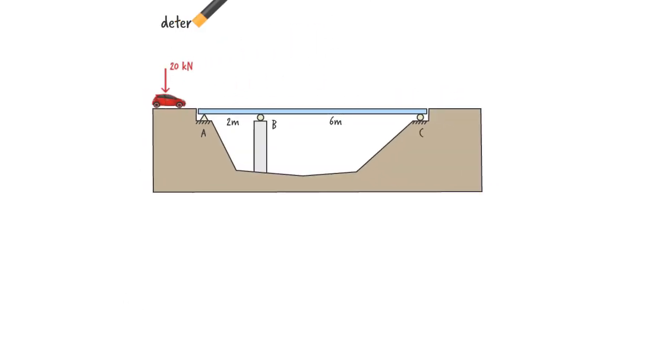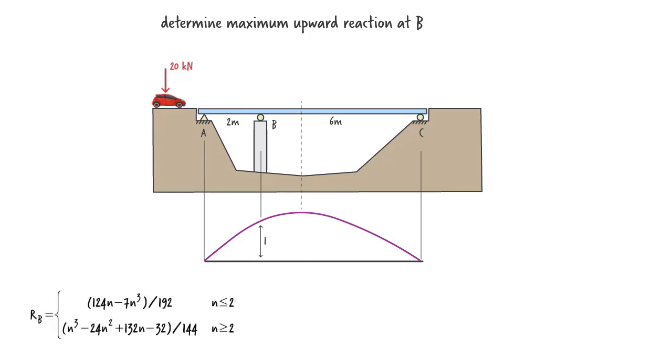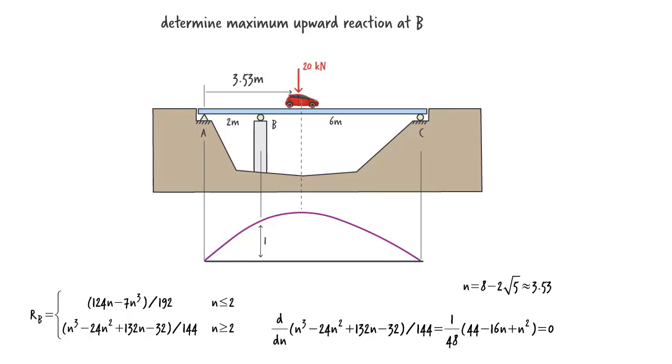Now let's also find the maximum upward reaction at B. The influence line shows that the maximum height of the diagram is located in segment BC. This means we need to take the derivative of the second reaction equation, then set it to 0, and solve for N. So the maximum reaction force at B develops when the vehicle is 3.53 meters to the right of A. At that point, the height of the influence line is 1.24, which makes the maximum upward reaction at B equal to 24.85 kN.